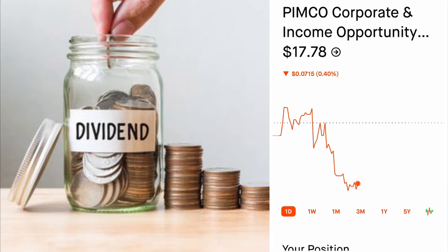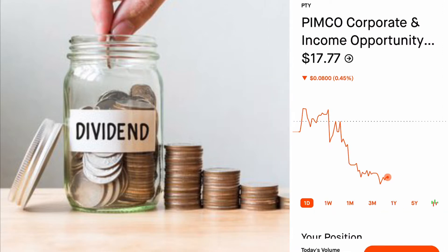There are companies that have capital growth and also pay a dividend — a good example is Microsoft. Then there are dividend kings; a good example is Coca-Cola. You may have heard the phrase 'spend the interest but not the capital.' We're trying to live off the interest, and I want to paint a bigger picture so you can see roughly how much money is needed to generate these dividend payments.